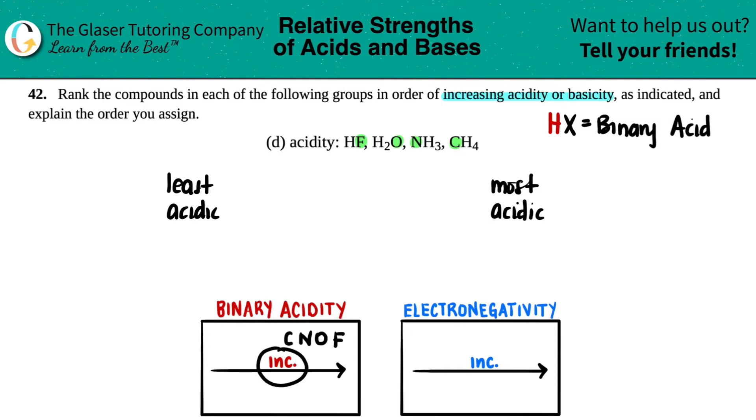But for binary acids, your acidity increases as you go from left to right. So the carbon one would be the least acidic, and the hydrogen fluoride would be the most acidic because you're increasing as you go this way. So most acidic would be the fluorine one, so that's HF. Least acidic is the carbon, so that's CH4. And as you go from left to right you're increasing, so oxygen would be more acidic than nitrogen if it's in a binary acid. So we got NH3 next and H2O.